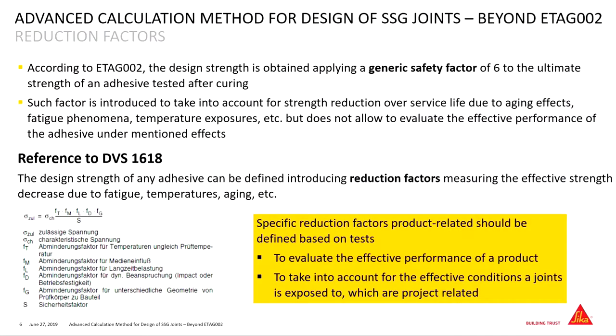Interesting is that with this topic we are not alone. Here is just an example — it's a German guideline, the DVS 1618. This is covering the calculation demands in the transportation industry. The railway industry is calculating joints according to this calculation, and they are working with reduction factors for all kinds of loading, reduction factors for all kinds of aging. They take into consideration the right load duration topics. I think this might be a similar way to follow up with the topics in the facade or architectural world as well.